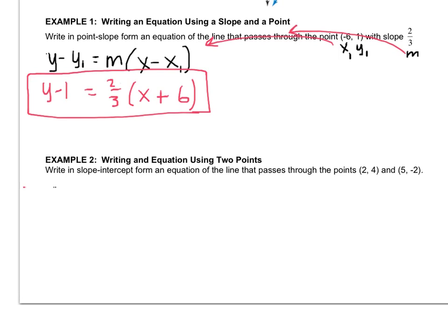Example 2: write in slope-intercept form—see now you've got to pay attention to what kind of form they want—an equation of the line that passes through the points (2, 4) and (5, -2). So I want to use that formula that we learned a very long time ago that we haven't necessarily used that much. It's y₂ minus y₁ over x₂ minus x₁. I taught you this back in the slope lesson, which was lesson 4.2, so I'd like to use it now.